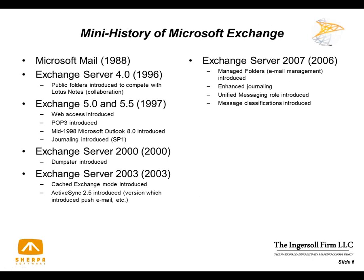Exchange 2007 is the first version that got into the RIM and eDiscovery universe, more so with RIM. Managed folders were introduced. The journaling function, introduced back in 1997, became more robust in that you could select individuals instead of having to journal an entire database. Unified messaging — the ability to have voicemail messages come into your mailbox — was introduced as a default feature, making it easier to deploy the concept of delivering voicemail messages directly into a user's inbox.